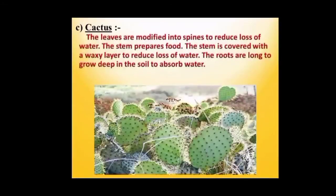This figure shows some typical plants that grow in a desert. How are these adapted to the desert? The leaves of cactus are modified into spines to reduce loss of water. The stem prepares food, which is why the stem is a little fleshy. The stem is also covered with a waxy layer to reduce loss of water. The roots are long and deep in the soil to absorb water.